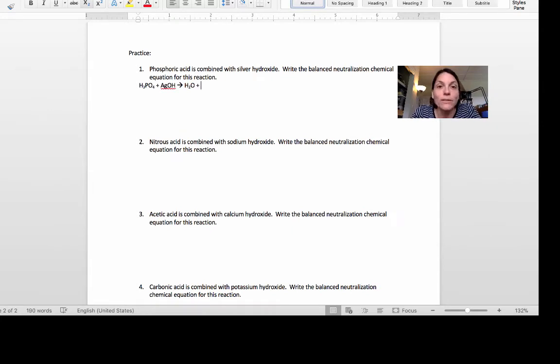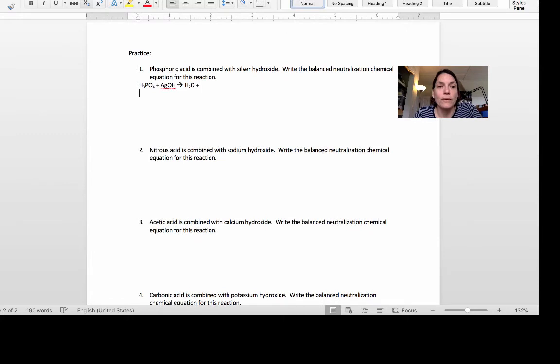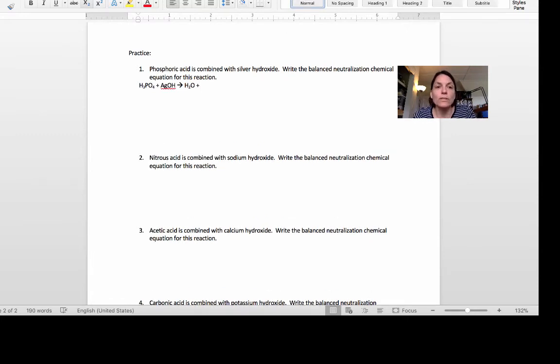Now we're going to leave that blank for a minute and we're going to figure out what our salt is going to be. First thing I'm going to do is look up the charge on silver on my periodic table. If you look on your periodic table you have it marked. Silver is always a plus one. So let's write down the cation. Ag is a plus one.